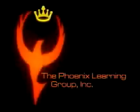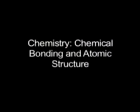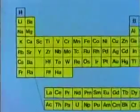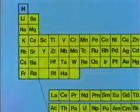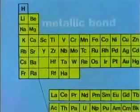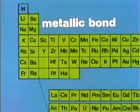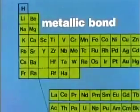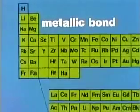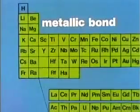In the periodic table of the elements, metals are all found in the same general area, and most of them have a number of similar properties. This can be explained by the metallic bond that is found only between atoms of metals.